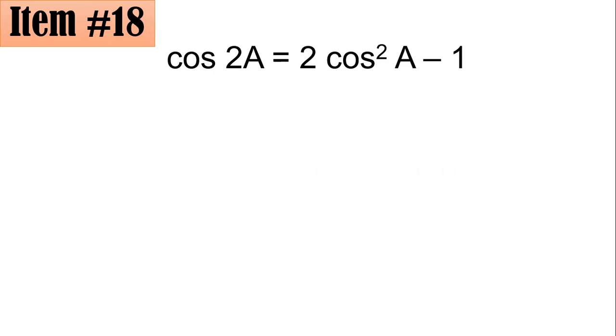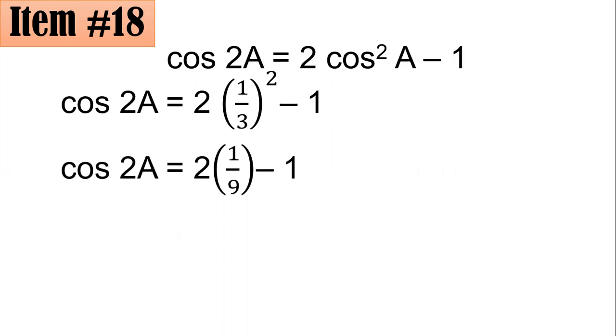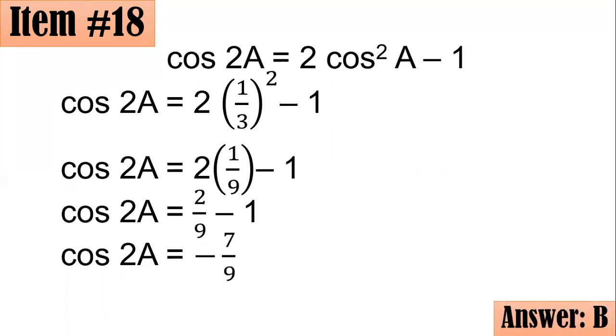Cosine squared A means the square of cosine A. So by substitution, cosine 2A equals 2 times the square of 1 third minus 1. The square of 1 third is 1 ninth. 2 times 1 ninth is 2 ninths. And subtracting it by 1, we have negative 7 ninths, letter B.